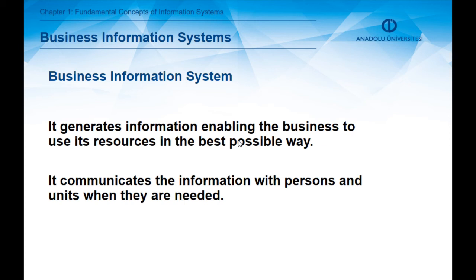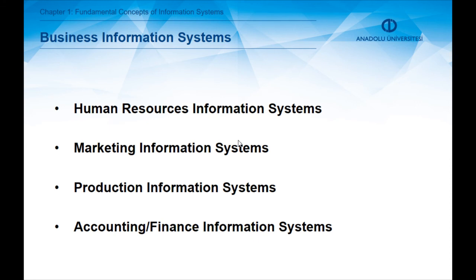Now we can define business information systems. A business information system is generally about the transformation of data and information into a beneficial form to be used by managers in their decision-making processes. It generates information enabling the business to use its resources in the most effective and efficient manner and communicates information to persons and units when needed. In this course, business information systems are classified in four categories: human resources information systems, marketing information systems, production information systems, and accounting and finance information systems.